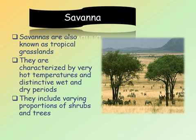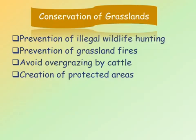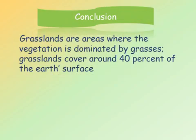How can these grasslands be conserved? First, prevention of illegal wildlife hunting. Second, prevention of grassland fires. Third, avoid overgrazing by cattle. And lastly, creation of protected areas.